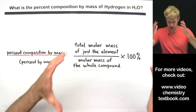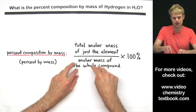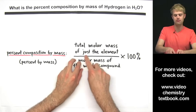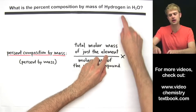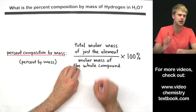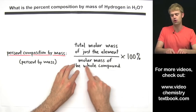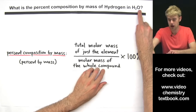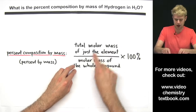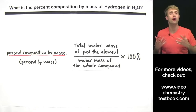Here's our equation, and it has a fraction with a top and a bottom. On the top of the fraction, we have the total molar mass of just the element — in this case, hydrogen. On the bottom of the fraction, we have the molar mass of the whole compound — in this case, water, H₂O. We divide the top by the bottom, then multiply by 100%.